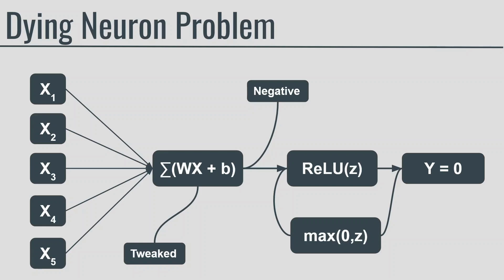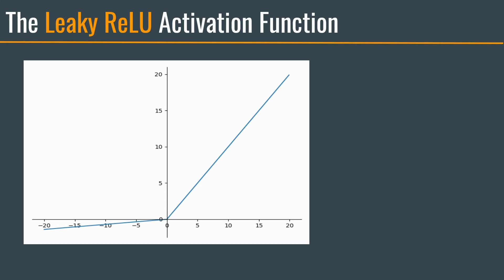To solve this problem, you may want to use a variant of ReLU called Leaky ReLU. Leaky ReLU is defined by f equals max of alpha times z and z. The value of alpha is generally chosen to be 0.01. This small leak ensures that the neuron never dies. The neuron may go into a long coma, but it will have a chance to eventually wake up.